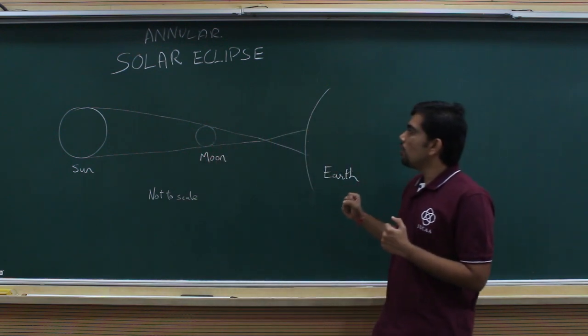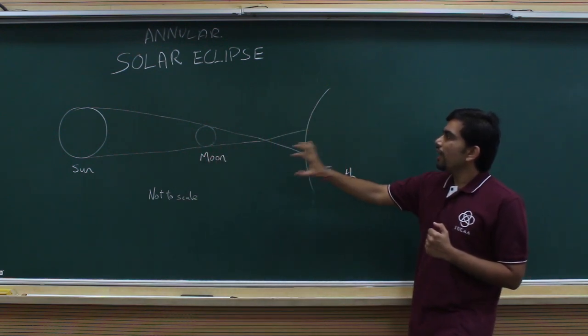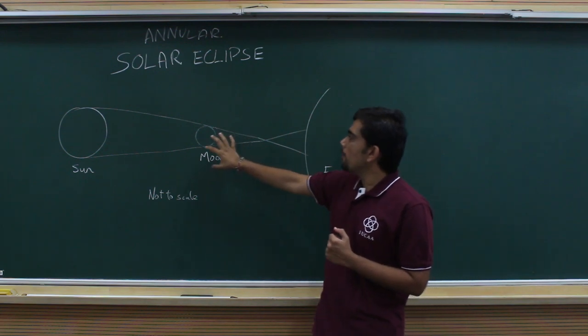This is a typical example of an eclipse-like situation where the moon has come between the Sun and Earth.